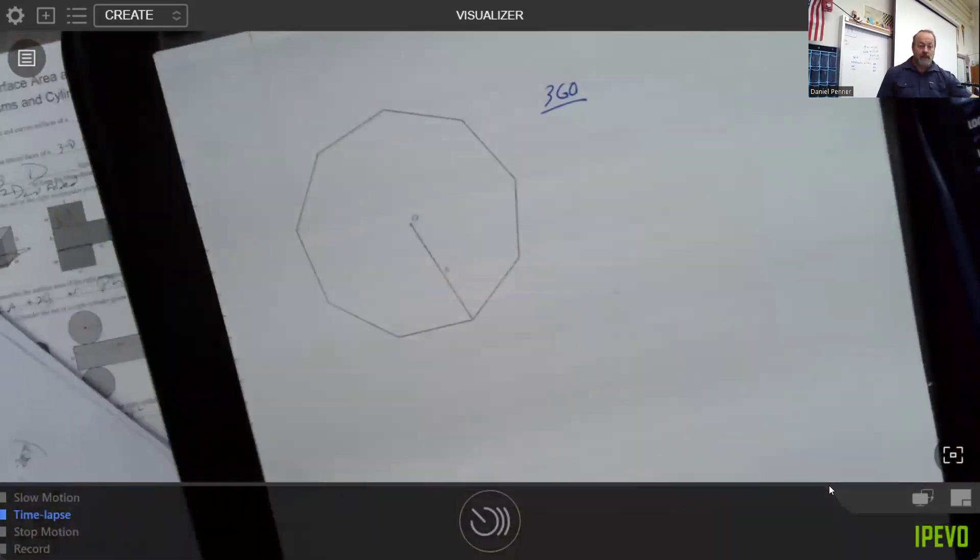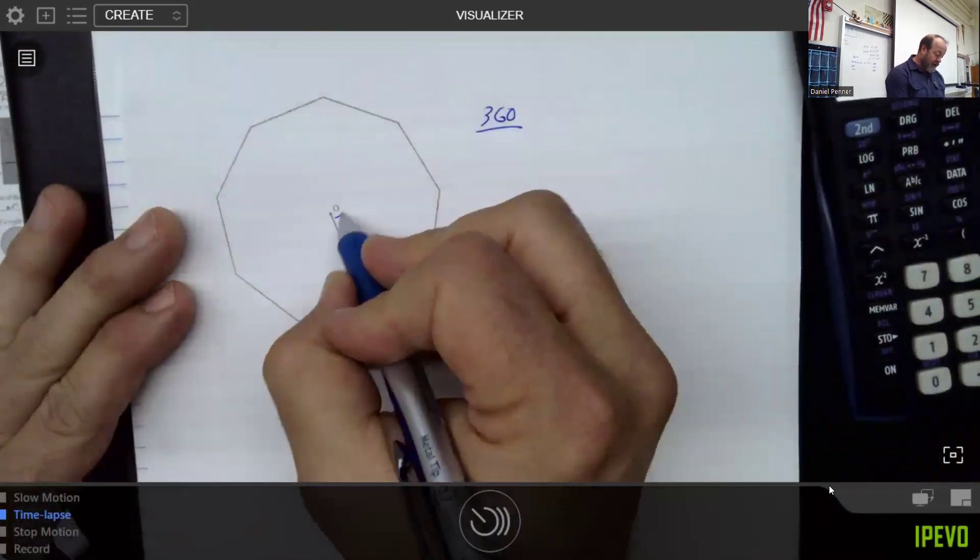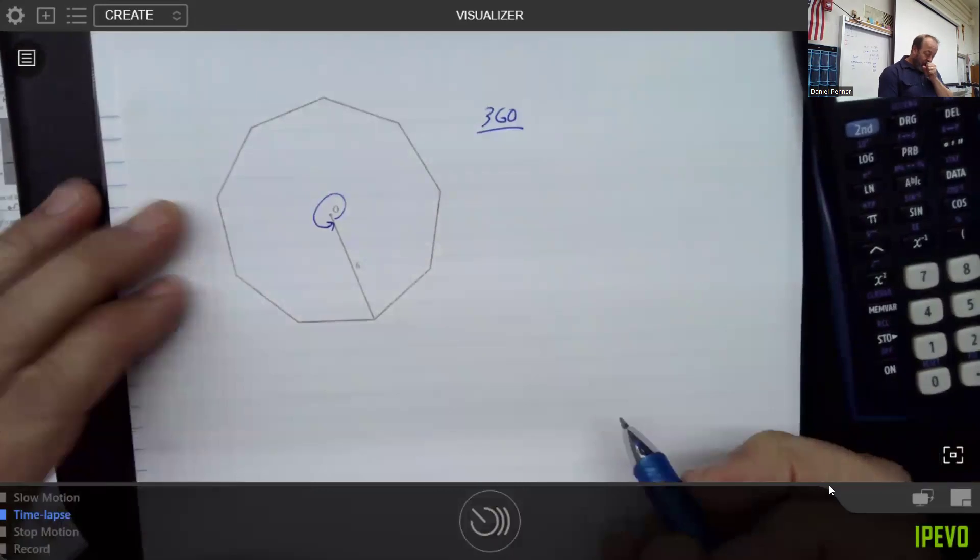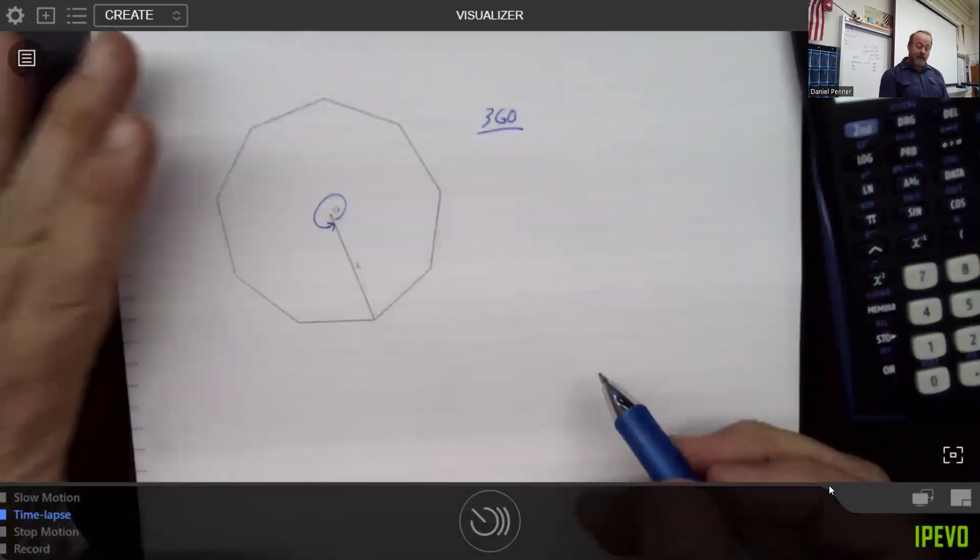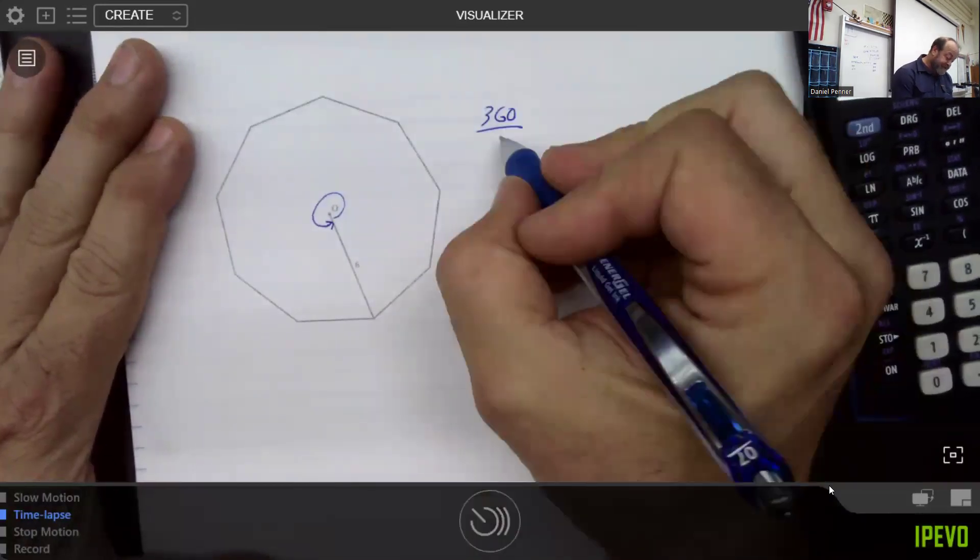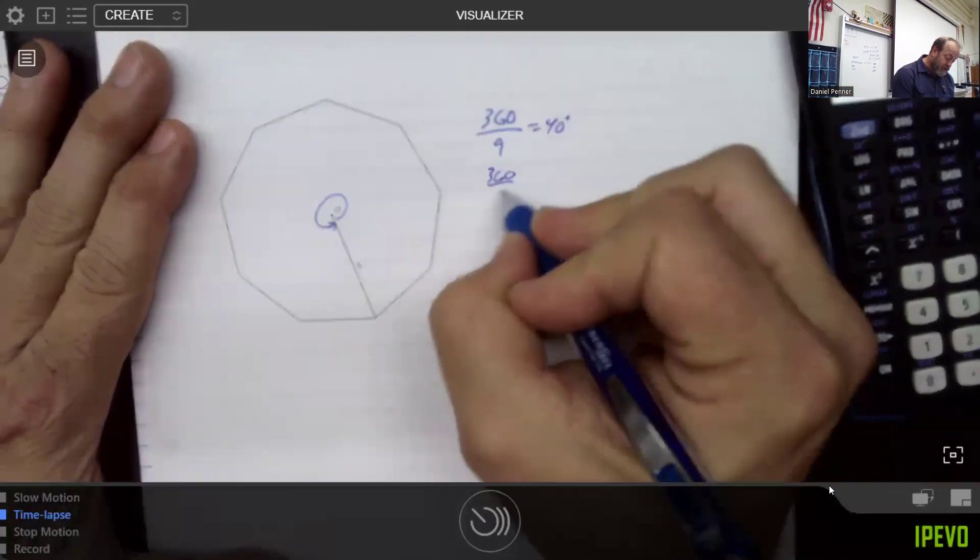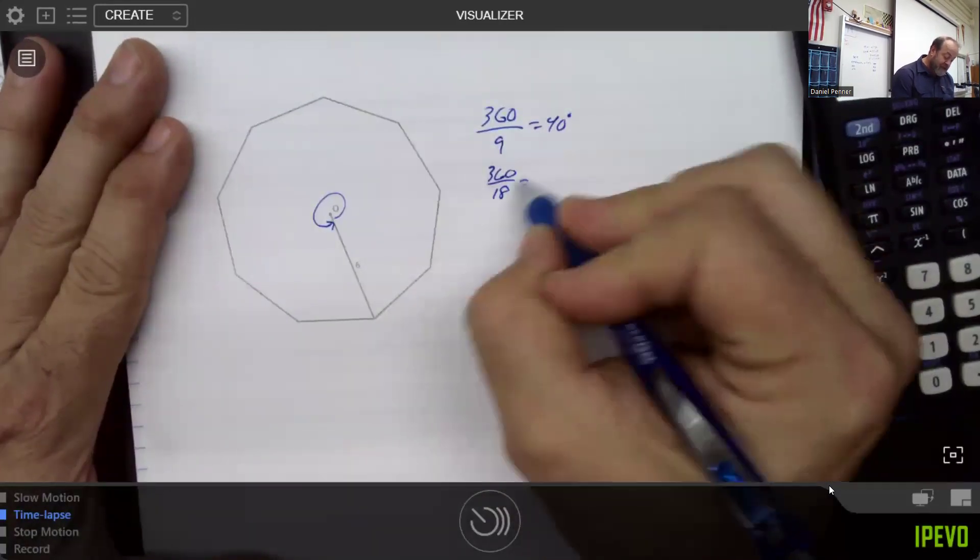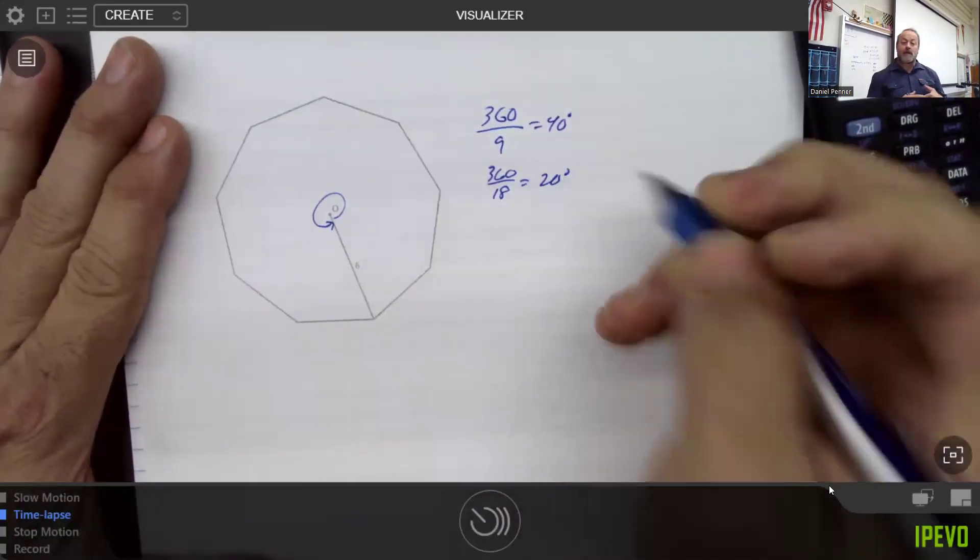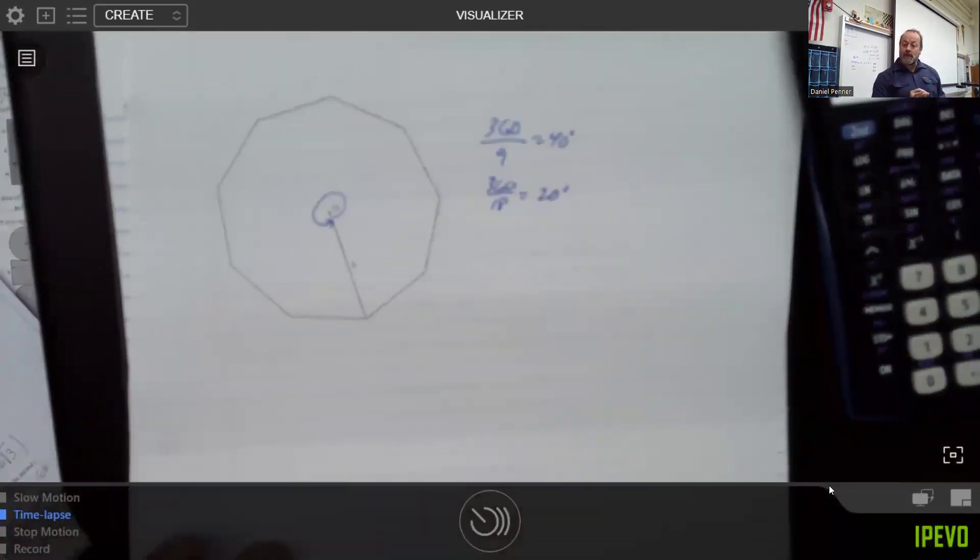So if we were to take that 360 and divide it by nine, we get 40 degrees, or we could also divide by 18 and get 20 degrees. It depends on what your choice is. Some people like one, some people like the other.